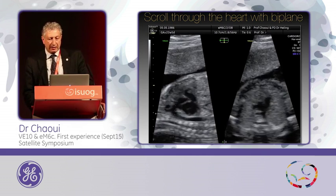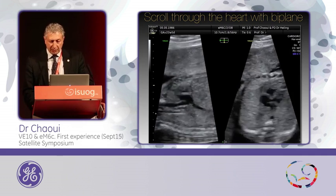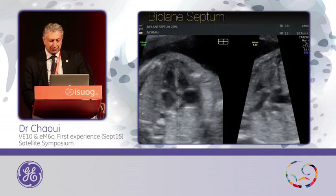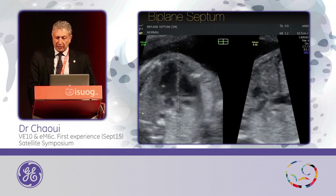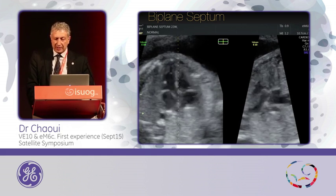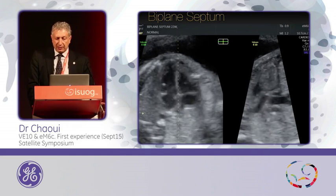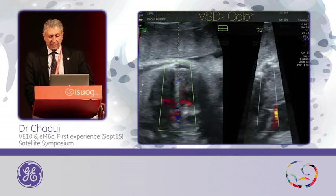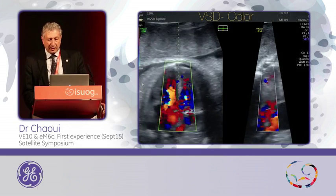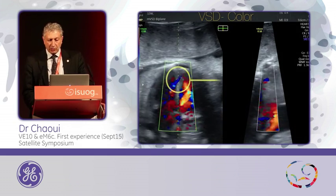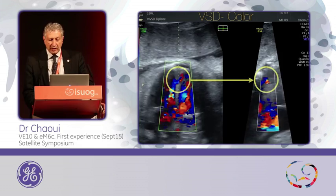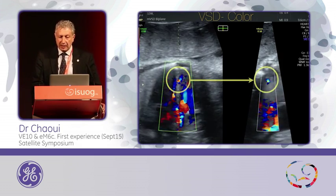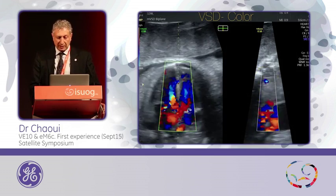So you can use the biplane for several purposes. I show you here another application — the septum — where you can see exactly the line along the septum. And it was obvious that the first case I had, where there was a ventricular septal defect in this plane, I was trying to show it in the other plane as well. And you see here that the VSD was seen in one and then the other plane, which was clearly shown.